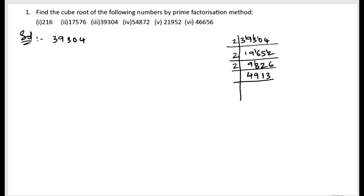So 4913, we have seen this number in the previous problem also. So what is that? It is the cube of 17. So we can go with 17. So 17, what is the nearest number to 49 in the 17 table? 17 times 2 is 34. 17 times 3 is 51. So we can go with 2. 17 times 2 is 34.